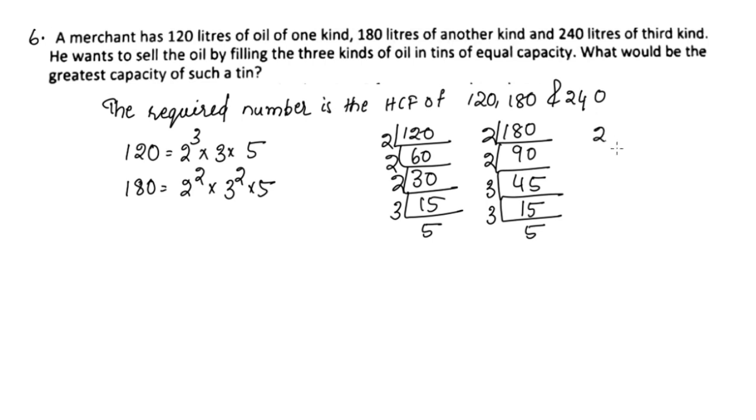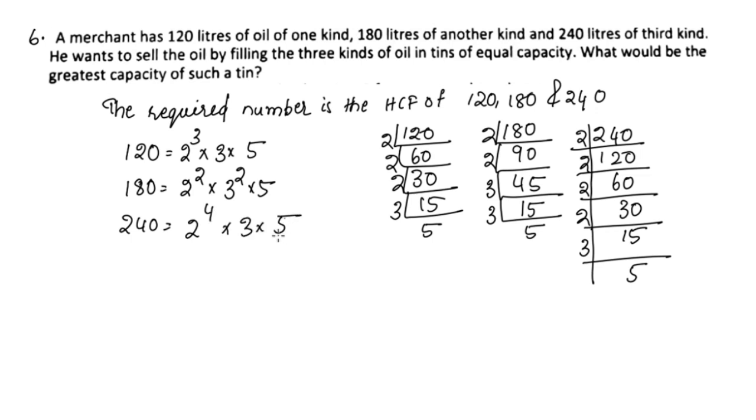240: 2 into 120, again 2 into 60, again 2 into 30, again 2 into 15, 3 into 5. So 240 equals 2⁴ × 3 × 5.